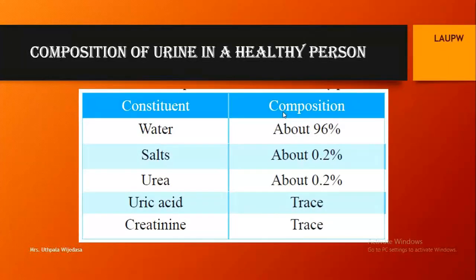The urine that is finally formed contains salts, a certain percentage of urea, and very little amounts of uric acid and creatinine. In a diabetic patient, in addition to these, there is also a little amount of glucose. That is all about the process of urine formation, which consists of three main processes: ultrafiltration, selective reabsorption, and secretion.